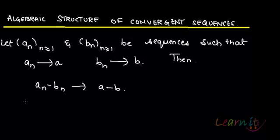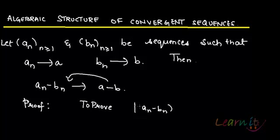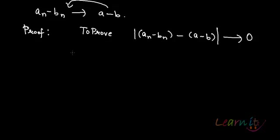So let us try to prove this. The proof goes like this. What we need to prove is that the modulus of a_n minus b_n minus (a minus b) is tending towards 0. That's what we have to prove.